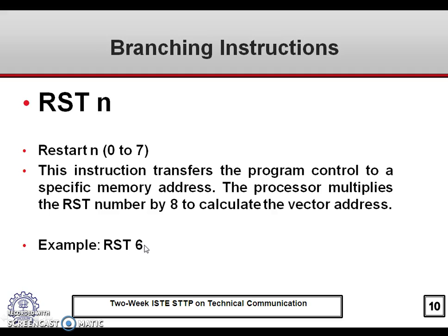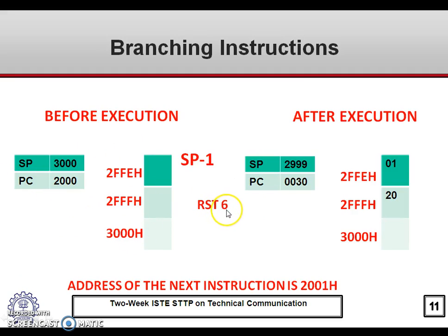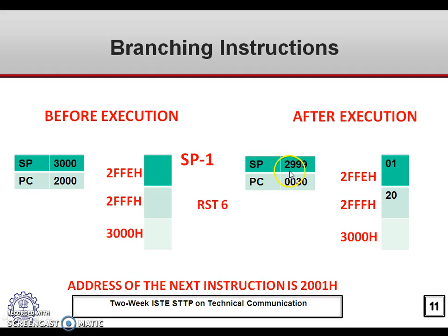For example, RST 6: the vector address is 6 multiplied by 8, which is 48 in decimal or 0030H in hexadecimal. Before execution, the stack pointer is pointing to 3000H and the program counter is 2000H. On execution of RST 6, the program counter will contain 0030H — the vector address. The stack pointer is decremented to store the return address, which is 2001H, the next address after 2000H, to be used at the end of the subroutine.